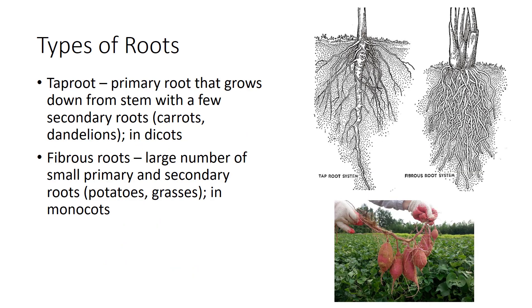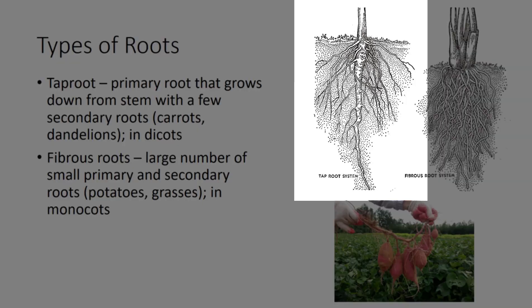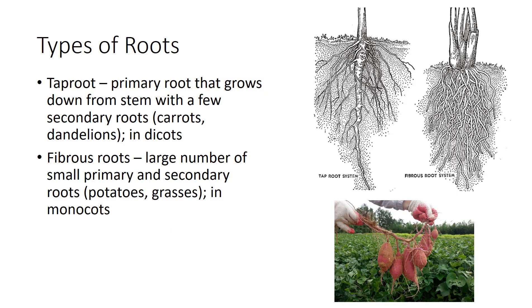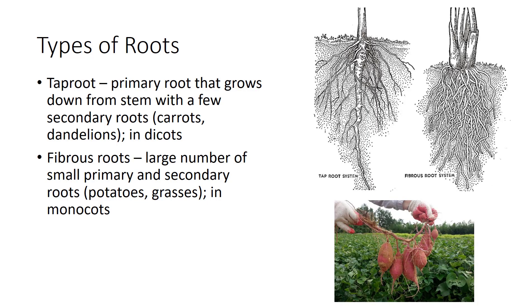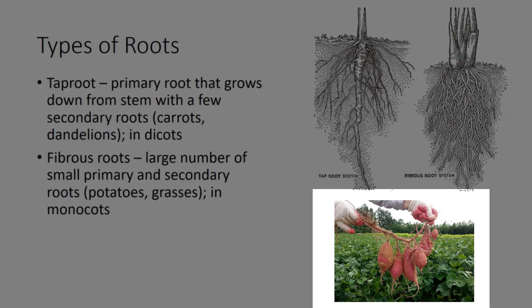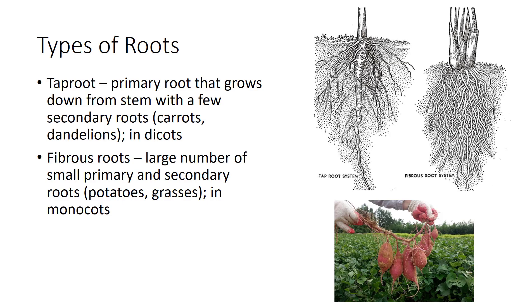There are two major classes of root systems. The taproot system has a primary root that grows down from the stem with only a few secondary roots — both carrots and dandelions are examples, and this is common for dicots. The fibrous root system has a large number of small primary and secondary roots — potato plants and grasses are examples, and this root system is common for monocots. Modified roots serve as a reserved food storage system. An example of a modified root is a sweet potato. Be careful not to confuse the modified root sweet potato with the modified stem Irish potato.